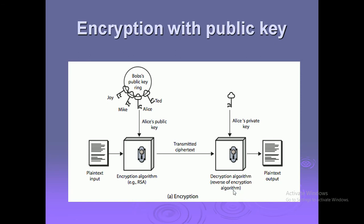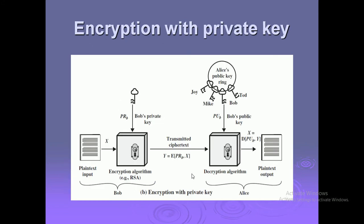Encryption with private key: the plaintext X is encrypted by Bob's private key and the ciphertext is transmitted. The receiver decrypts the message using Bob's public key and we recover the plaintext.